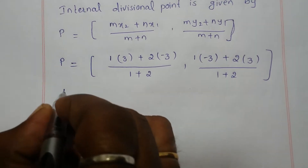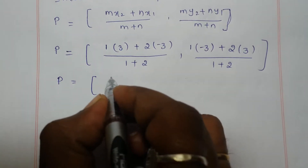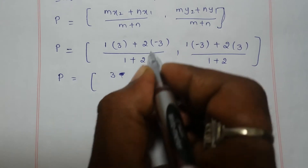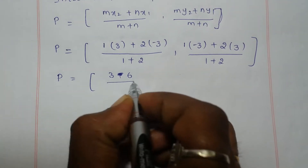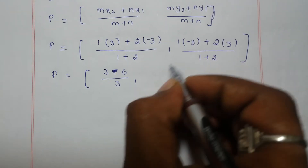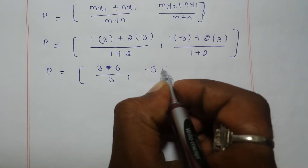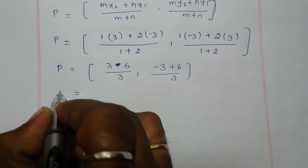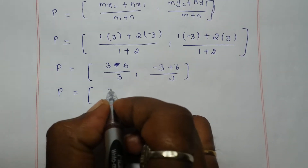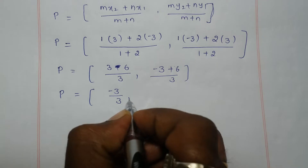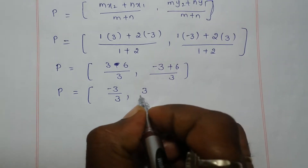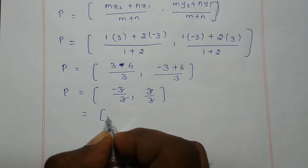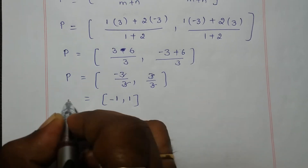So P equals: x-coordinate = (1×3 + 2×(-3)) / 3 = (3 - 6) / 3 = -3/3 = -1. y-coordinate = (1×(-3) + 2×3) / 3 = (-3 + 6) / 3 = 3/3 = 1. The 3s cancel, giving P = (-1, 1). These are the coordinates of point P.